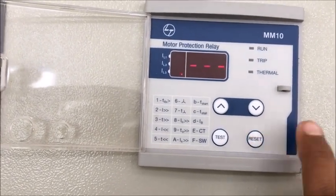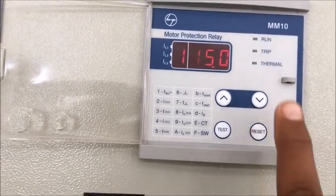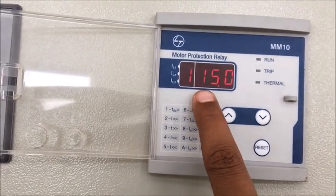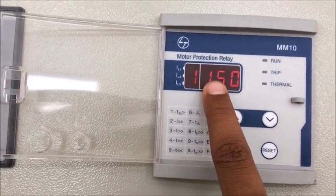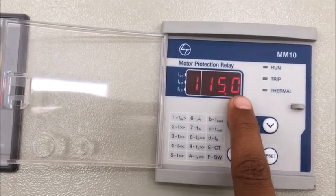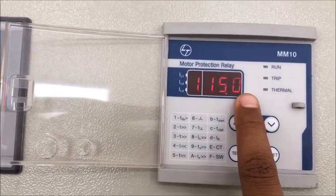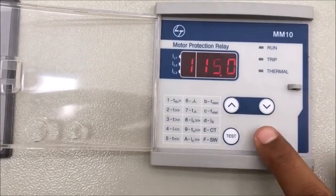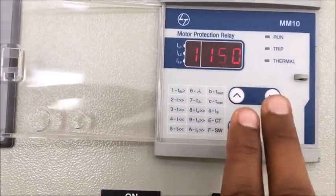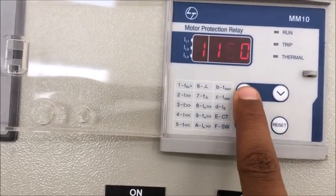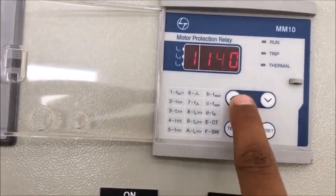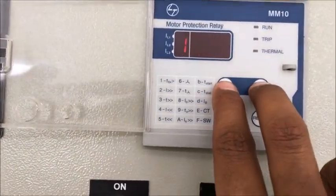Now press the reset button and you will see the number 1-2F which is already shown on front of the relay. One is for thermal overload time constant. If you want to change then press up arrow and down arrow simultaneously and then you can change the values like this. Then again press them to save these values.